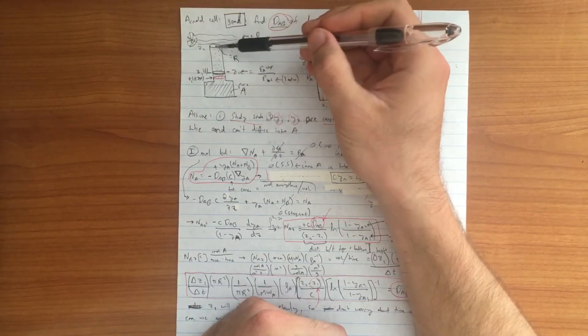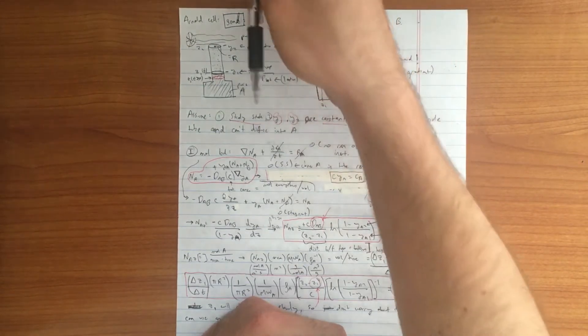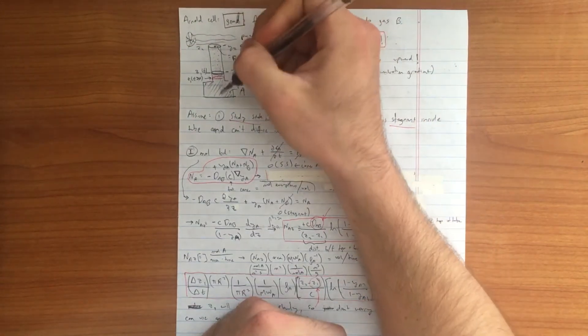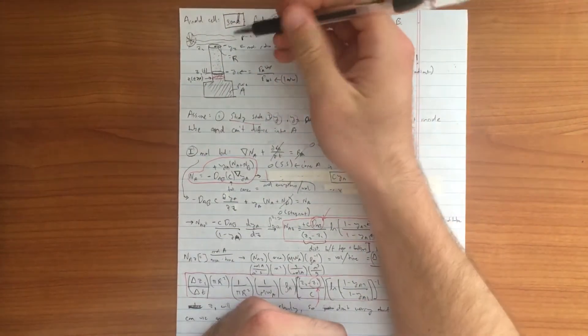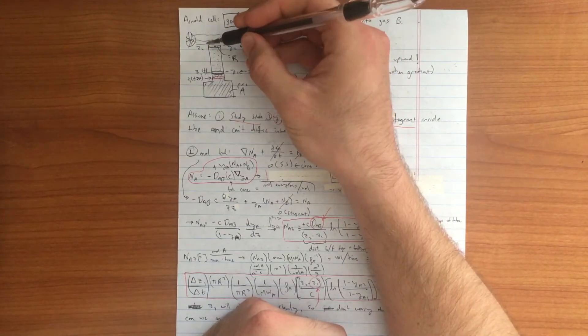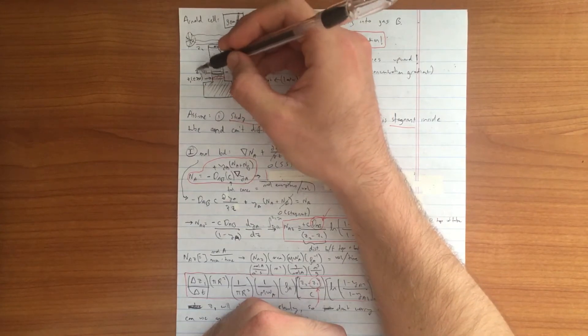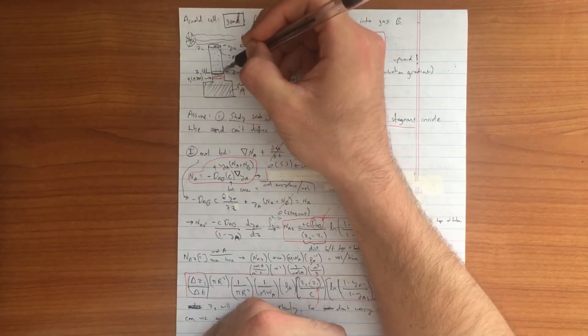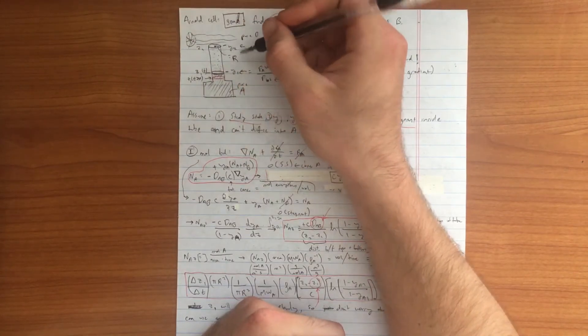Z2 corresponds to the Z value. We're going to define a coordinate system with Z going down and we can have X and Y going in the other dimensions but they're irrelevant in this example. Z2 corresponds to the top of the tube and Z1 corresponds to the interface level beneath the top of the tube.